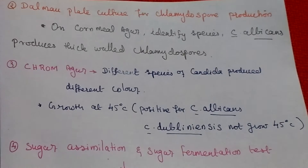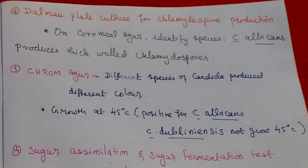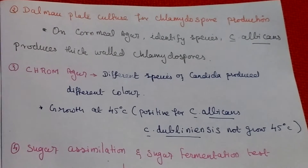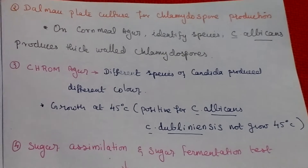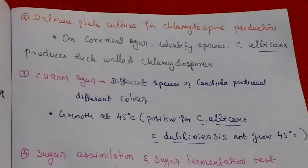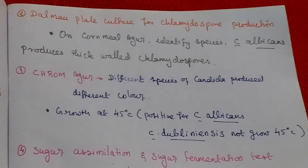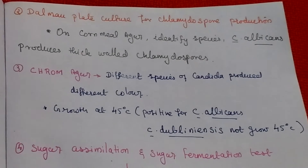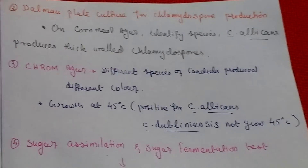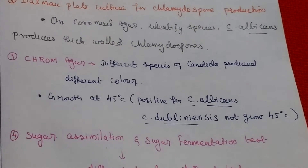Chrome agar is another medium where different species of Candida produce different colors. Additionally, growth at 45 degrees Celsius is positive for Candida albicans but not for Candida dubliniensis, helping to differentiate between the two species.